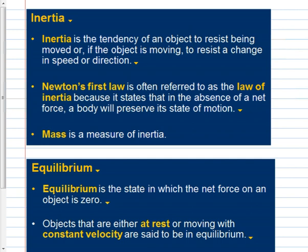Inertia is the tendency of an object to resist being moved. If the object is moving, it resists a change in speed or direction. Newton's first law is also called the law of inertia. Mass is a measure of inertia — the more mass something has, the harder it is to change its state of motion.